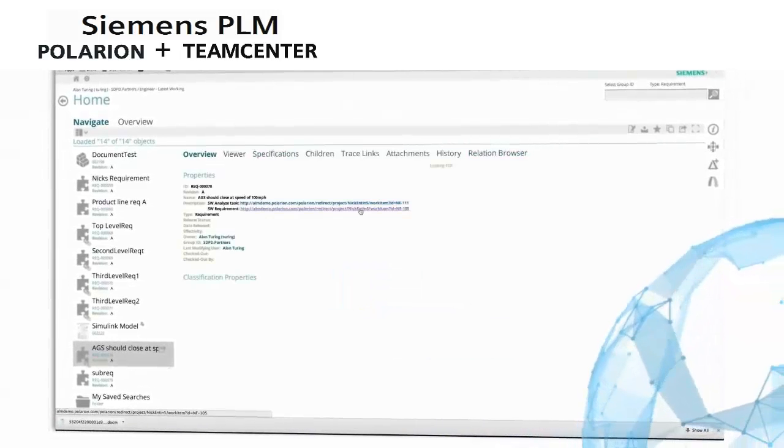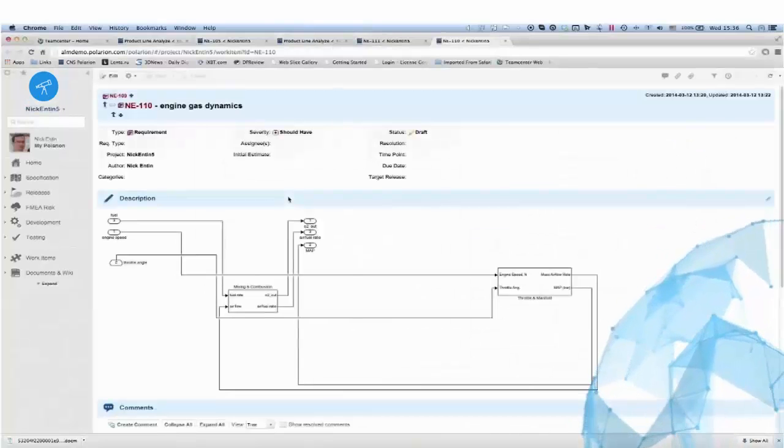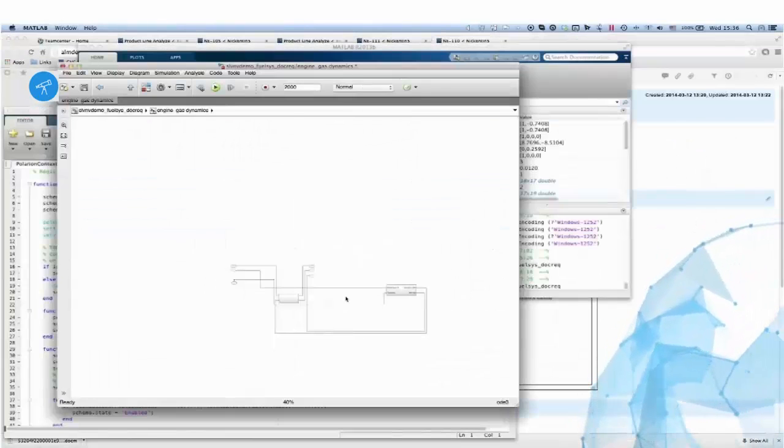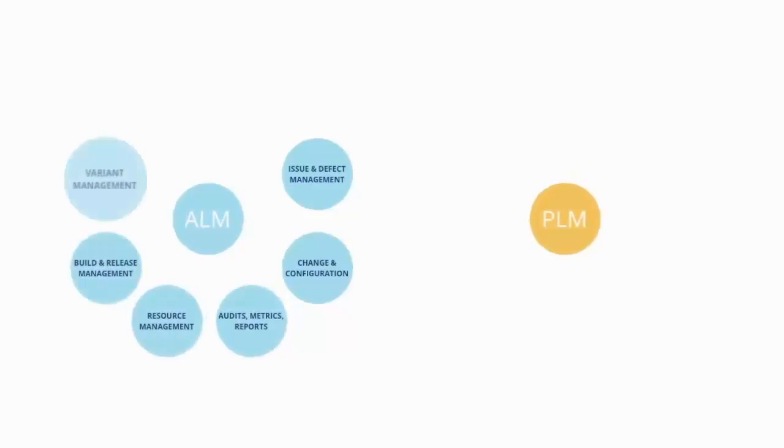For instance, with seamless access to requirements via the embedded UI available in both tools, users no longer have to jump back and forth to get critical information for their job. Change management, including automated propagation, is fully orchestrated and synchronized across both environments.